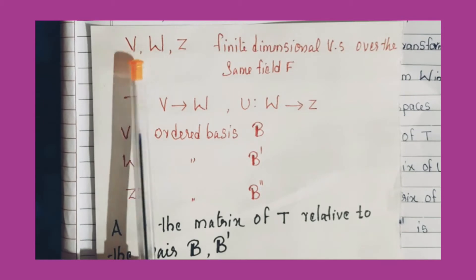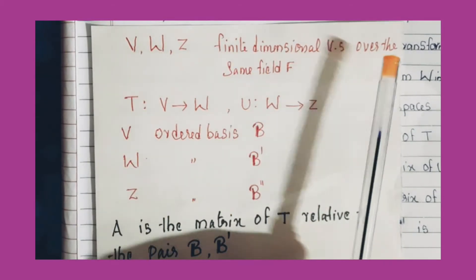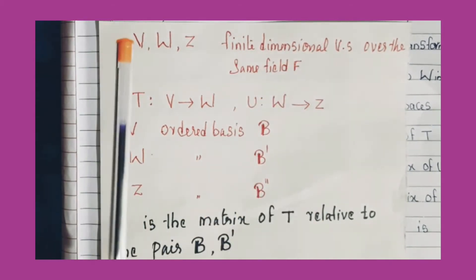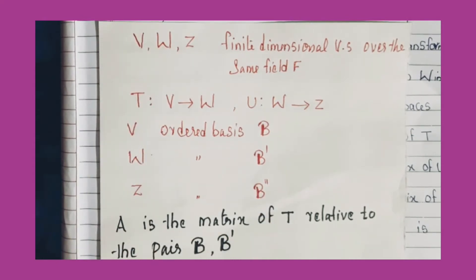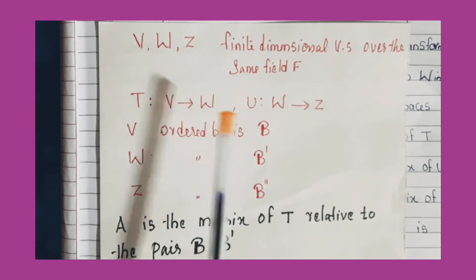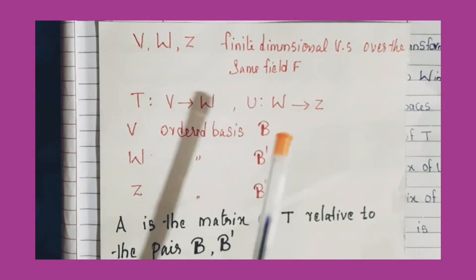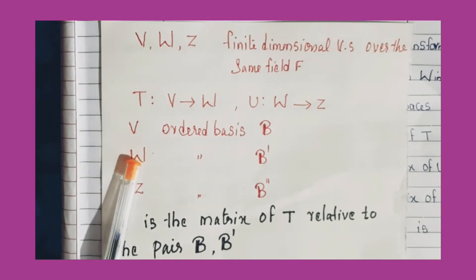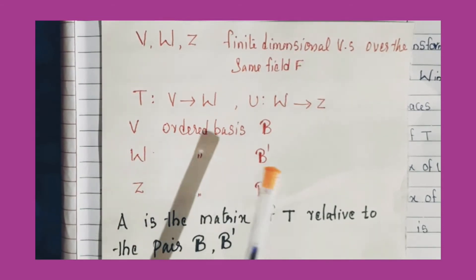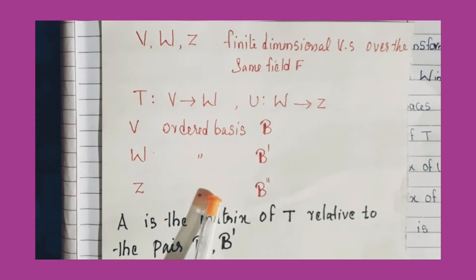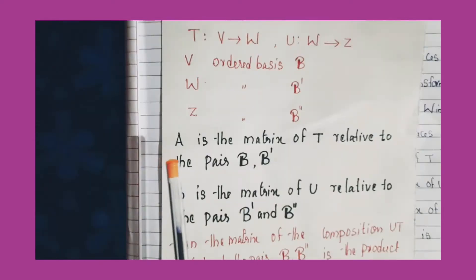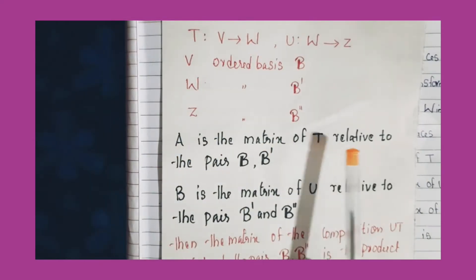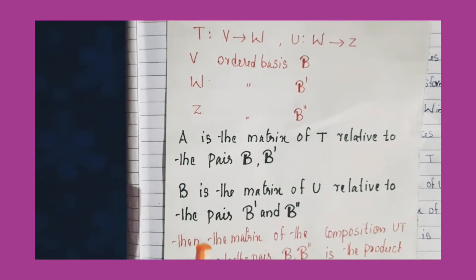Let V, W and Z be finite dimensional vector spaces over the same field F. T from V to W and U from W to Z are linear transformations over the same field F.